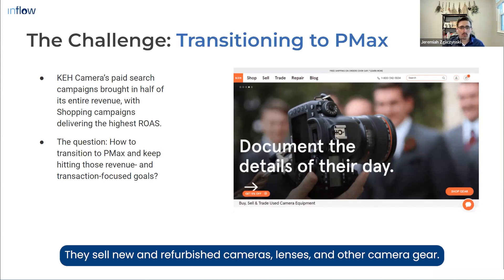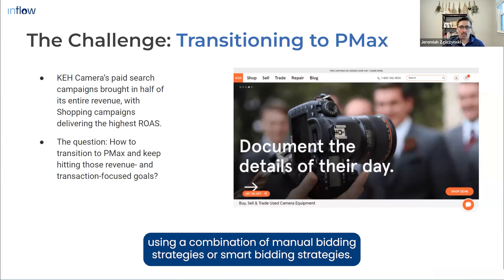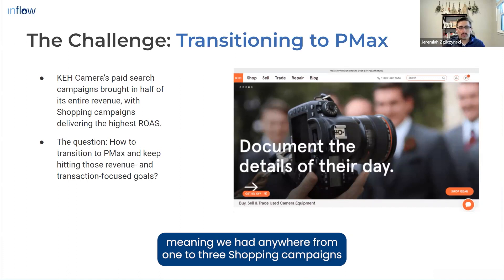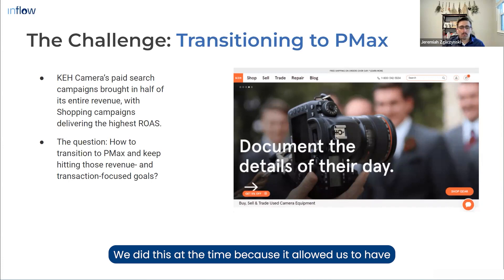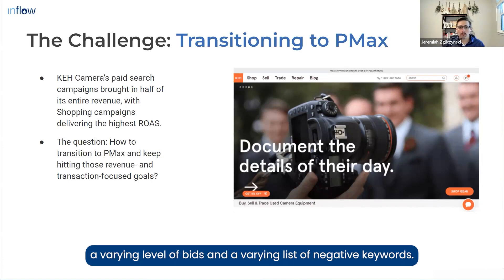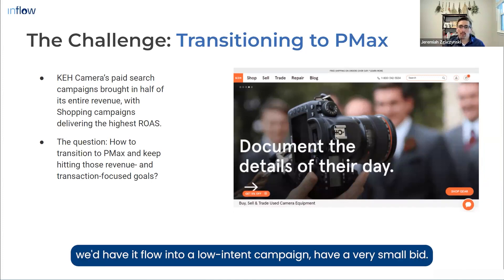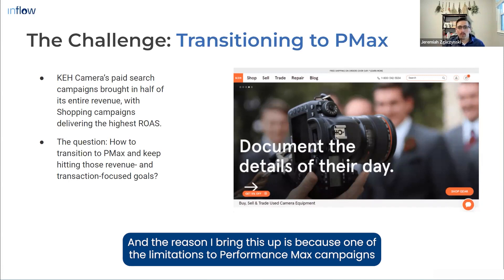KEH is one of our long-time clients — they sell new, used, and refurbished cameras, lenses, and other camera gear. Before switching to PMax, about half of all paid search revenue was coming from shopping campaigns using a combination of manual and smart bidding strategies. We were using a tiered structured system — anywhere from one to three shopping campaigns for each product category like cameras, lenses, and mounts. This allowed varying levels of bids and negative keywords to control which search terms appeared and what we paid for them.